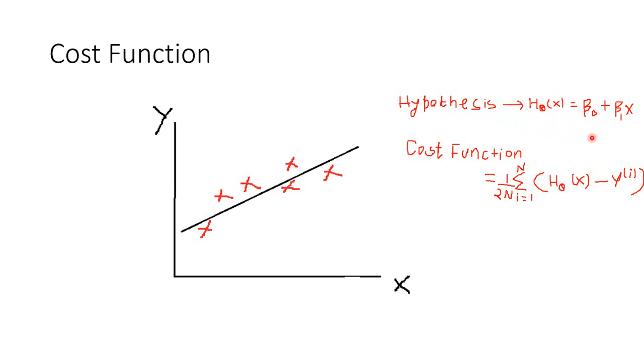Now let us define the cost function as 1 by 2n, where n is the number of input and output observations. If you look at the graph here, there are 6 observations, 6 crosses, so n is 6. n is the number of observations or data points you have, and then summation i equals 1 to n.